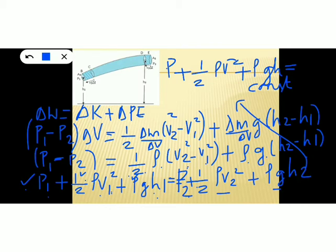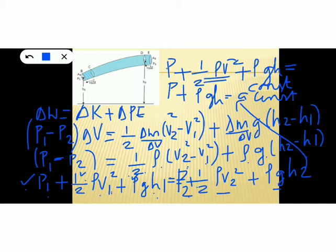This is Bernoulli's principle: the total energy of an incompressible fluid is constant. When the fluid is at rest, velocity V is zero everywhere, so the kinetic energy term vanishes and Bernoulli's equation becomes P plus rho GH equals a constant. Bernoulli's law is a conservation law of energy for a flowing liquid — it is based on the law of conservation of energy. This is a common MCQ question.